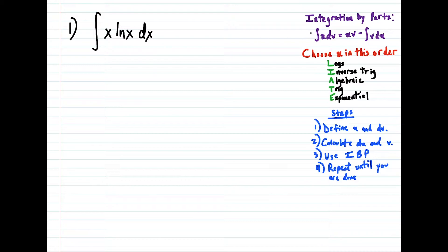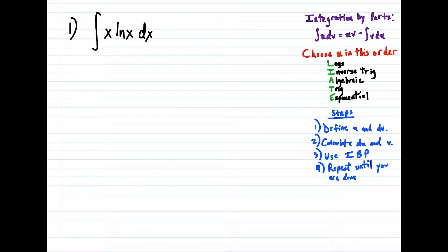For this first question here, we're going to use the integration by parts formula. Just know that we use integration by parts when u-substitution is not an option. This formula is kind of like the product rule but for integrals. The first thing we have to do is define u and dv from the original integral, and the order we choose u can be remembered with the mnemonic LIATE.